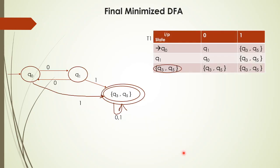This gives us the final minimized DFA. The states in the minimized DFA are Q0, Q1, Q3, and Q5. We check that Q3 and Q5 can be combined as the same state since they are equivalent, minimizing the DFA. This is the process of DFA minimization.